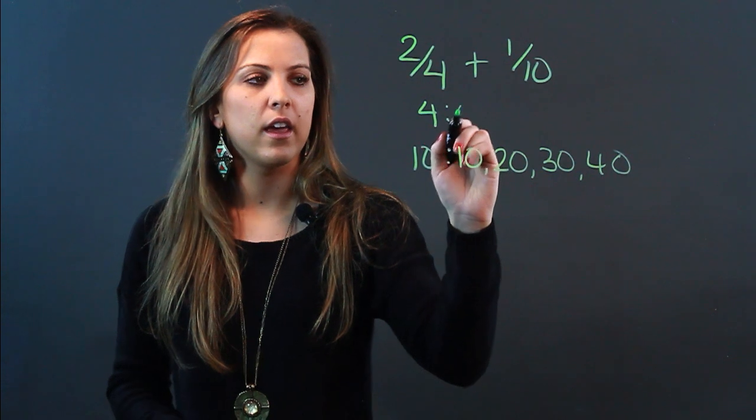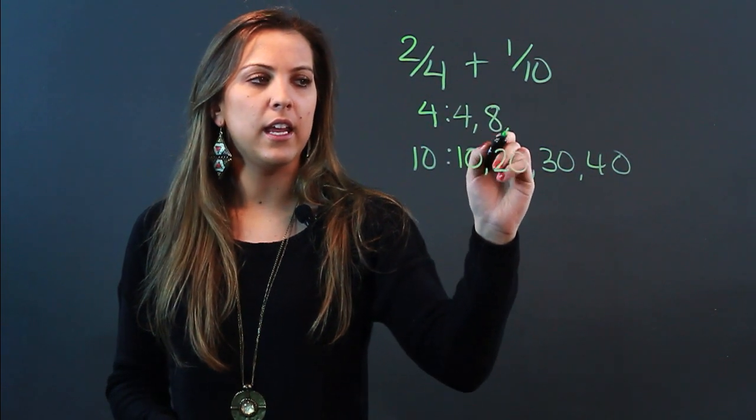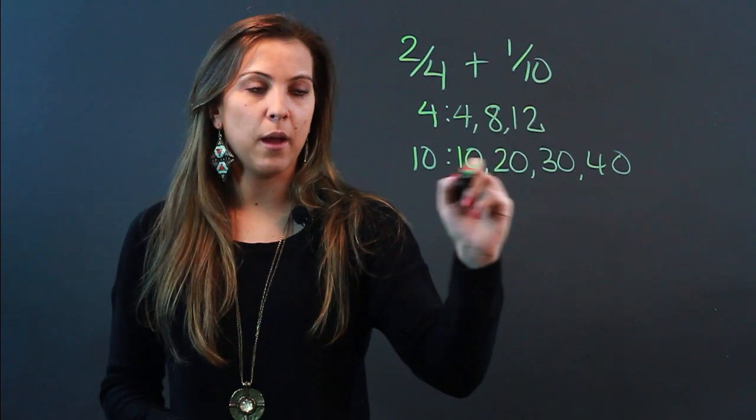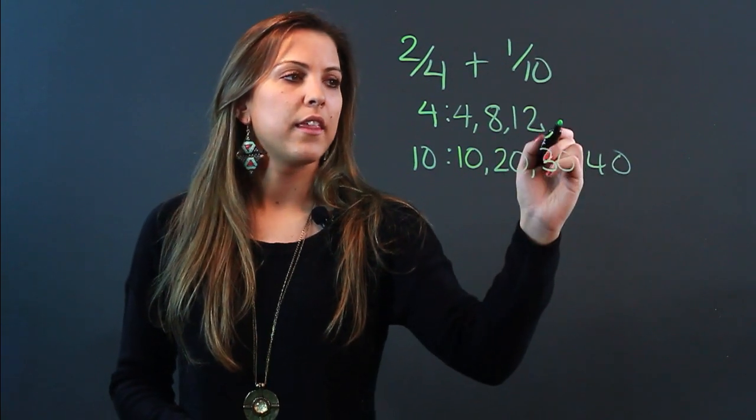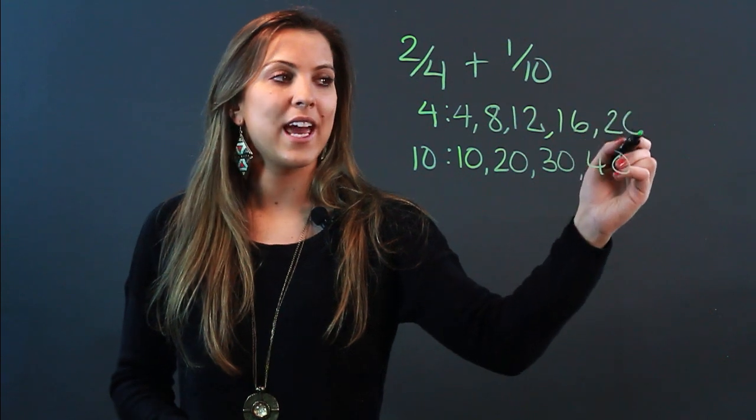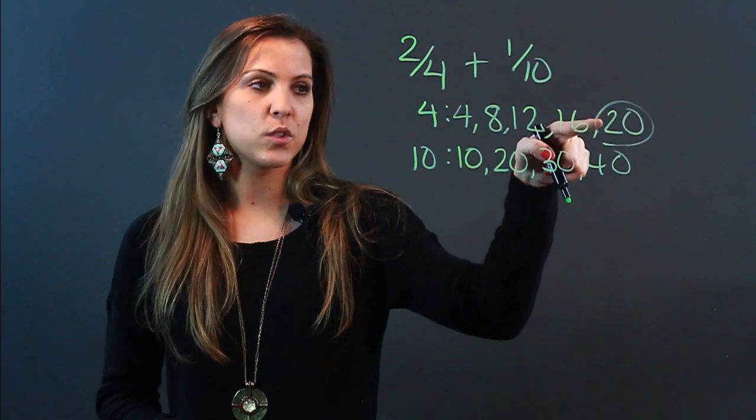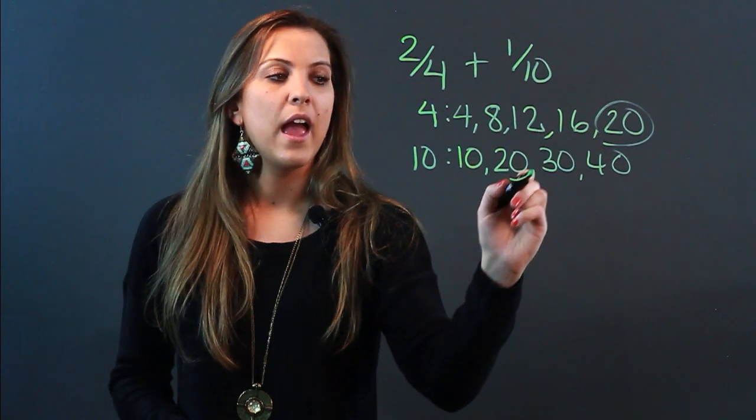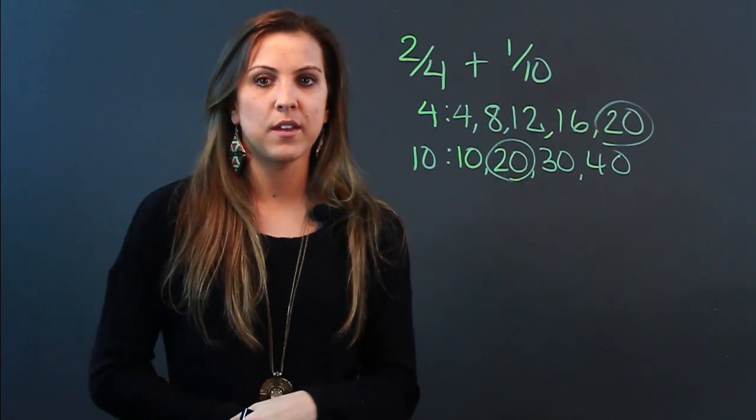Now I'm going to go to 4 and I start with 4, 8, 12. They have nothing in common yet, so I have to keep going. Then I have 16, 20, and I stop because I noticed that there's a 20 in my multiples of 4, and there's also a 20 in my multiples of 10.